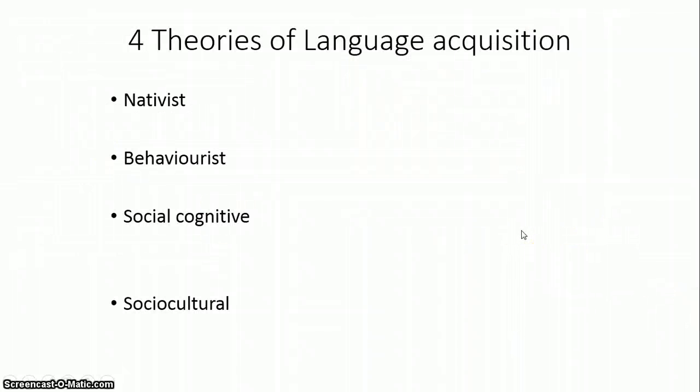Okay, there are four basic theories of language acquisition, or four basic ways in which the theorists identify that we acquire language: a nativist view, the behaviorist view, the social cognitive view, and the sociocultural view. So we look at each of these different perspectives on language acquisition one at a time.